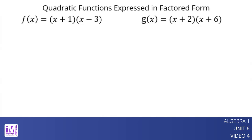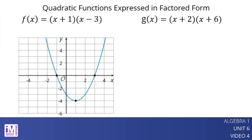If we graph y equals f of x, we see that the x-intercepts of the graph are negative 1 comma 0 and 3 comma 0. Notice that we can rewrite the x plus 1 term in f of x as x minus negative 1, then we can see the x-intercepts in the equation for f of x.